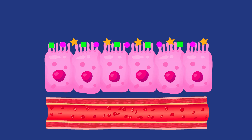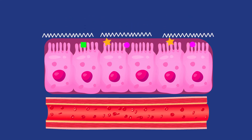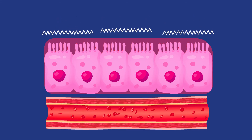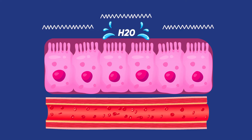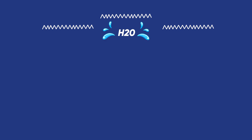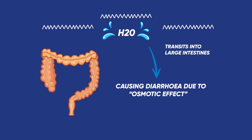During gastroenteritis, the inflammation of the intestines damages the mucosa lining and dramatically decreases the amount of these enzymes present. The relative lack of enzymes means carbohydrates can't be broken down and absorbed as effectively. Instead, excessive amounts of sugars and water stay in the gut lumen and transit into the large intestines. The abnormally high levels of sugar and water in the large intestines cause diarrhoea due to osmotic effect.